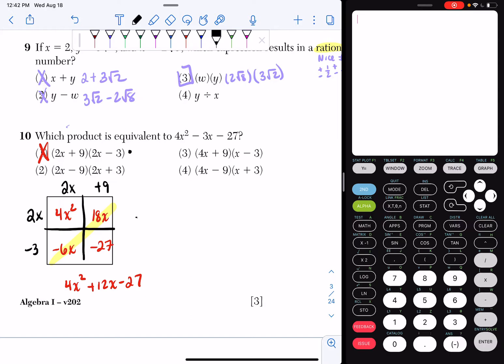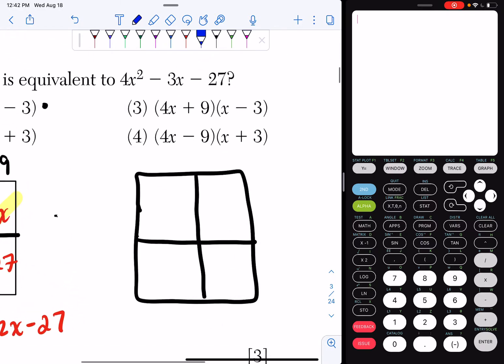Now I'm going to do the box method on choice 2. So I'm going to do it on 2x minus 9 times 2x plus 3. And when I do this one, I get 2x times 2x, which is 4x squared. 2x times negative 9 is negative 18x. 3 times 2x is 6x. And then 3 times negative 9 is negative 27.